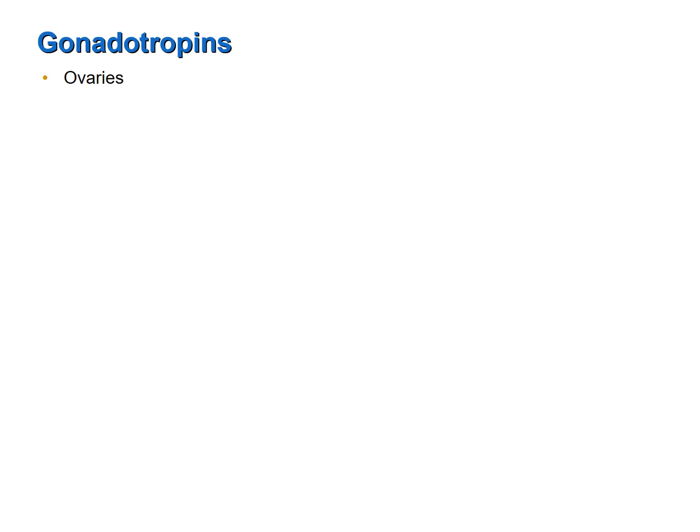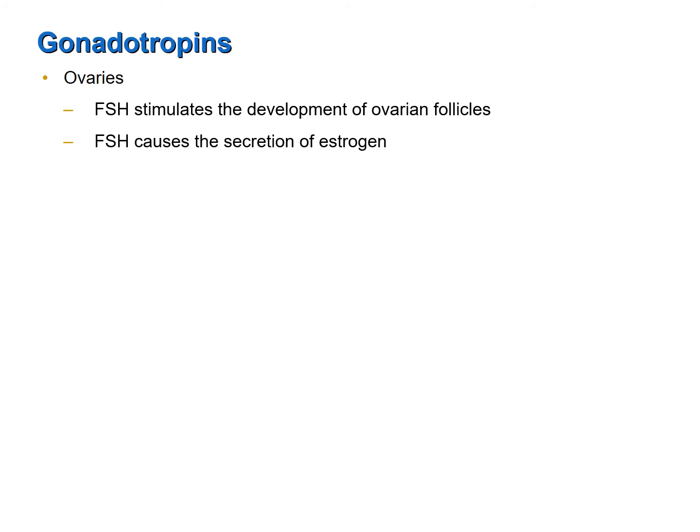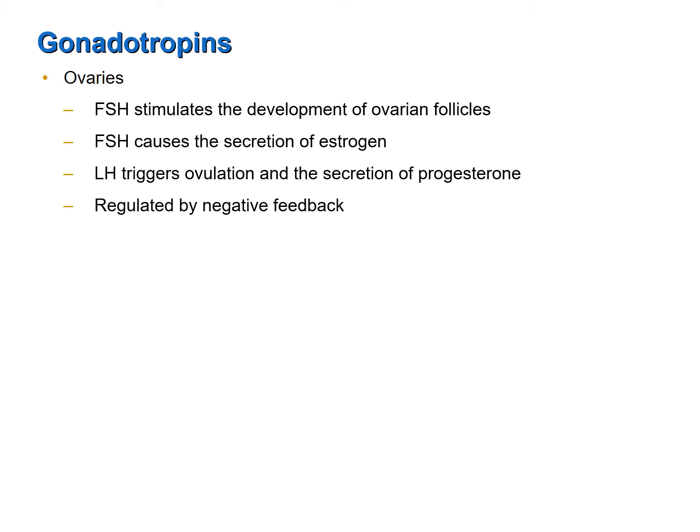In females, the gonadotropins act on tissues of the ovaries. Follicle stimulating hormone stimulates the development of ovarian follicles, and as those follicles develop, they secrete estrogen. Luteinizing hormone triggers rupturing of a mature follicle to release an oocyte — this process is called ovulation. What remains of the ruptured follicle is the corpus luteum, which secretes the hormone progesterone. As follicle stimulating hormone and luteinizing hormone levels in the blood rise, they feed back onto the anterior pituitary gland and the hypothalamus, decreasing the release of further luteinizing hormone and follicle stimulating hormone.